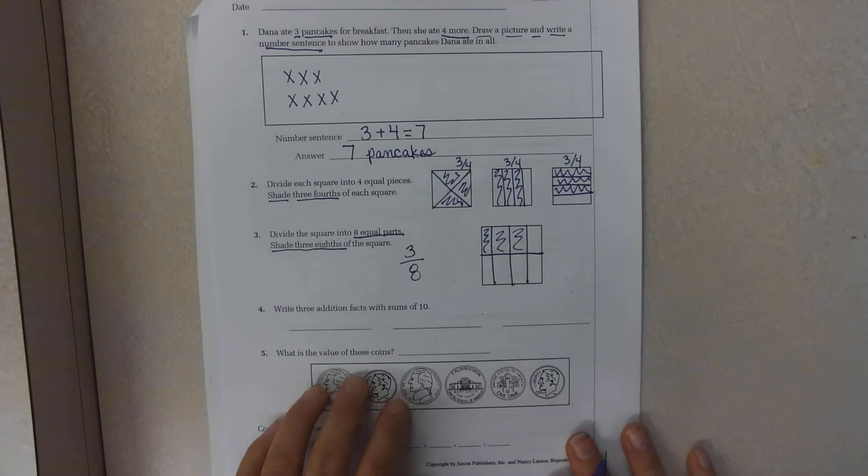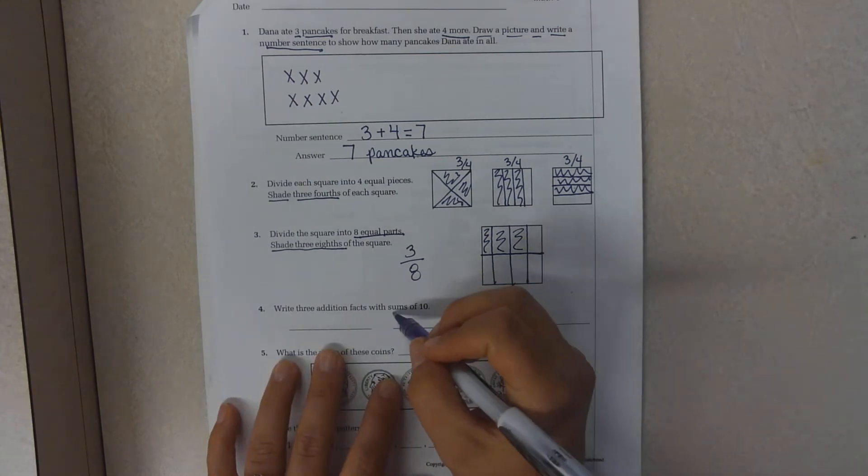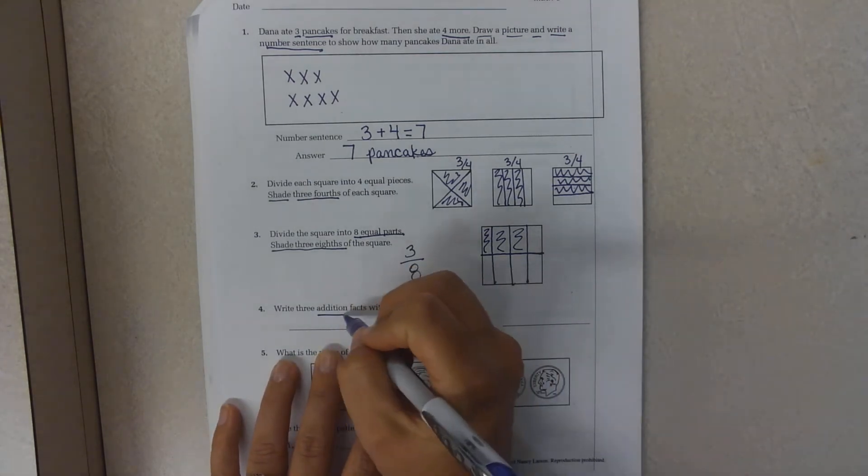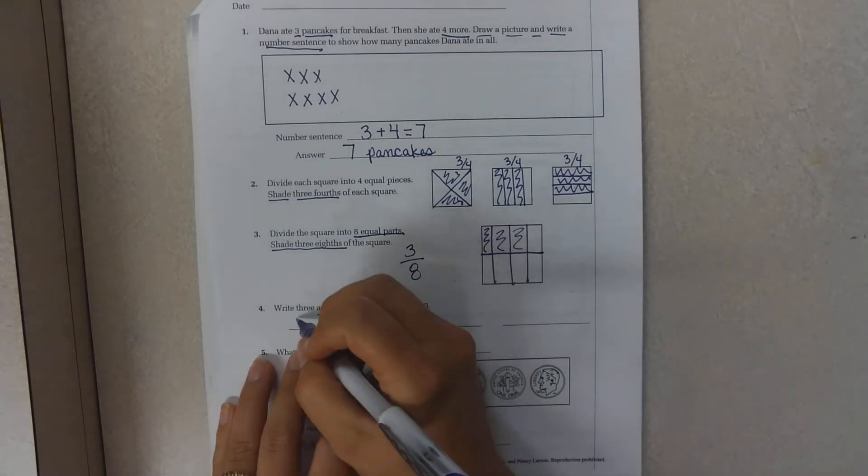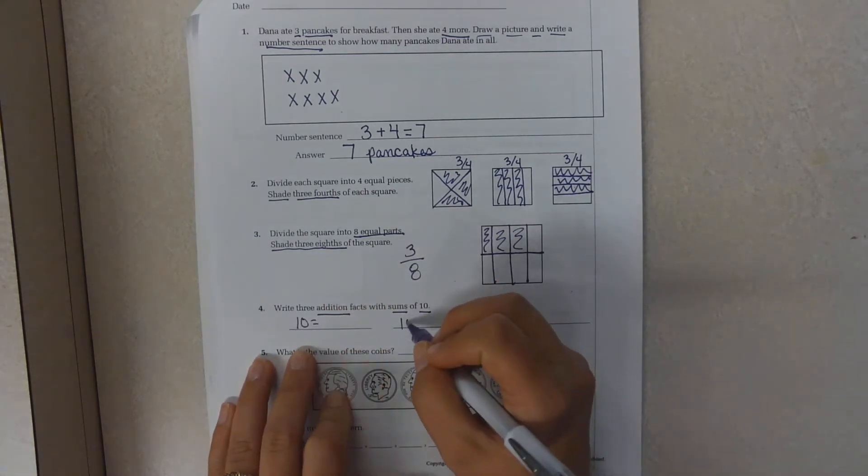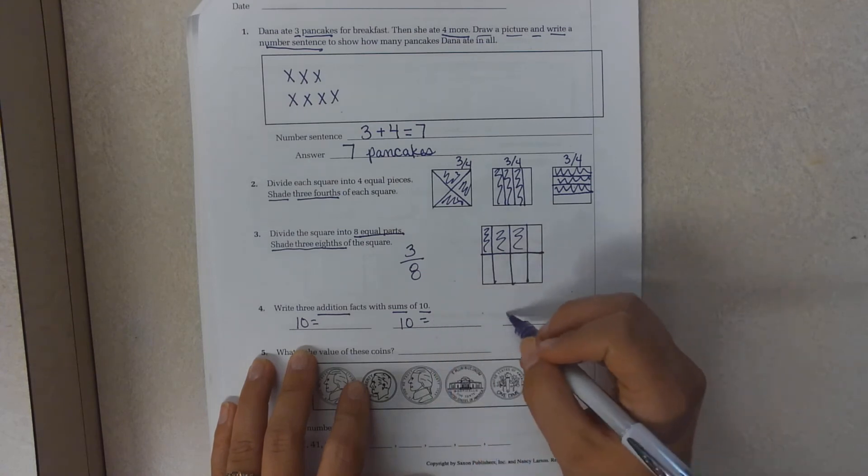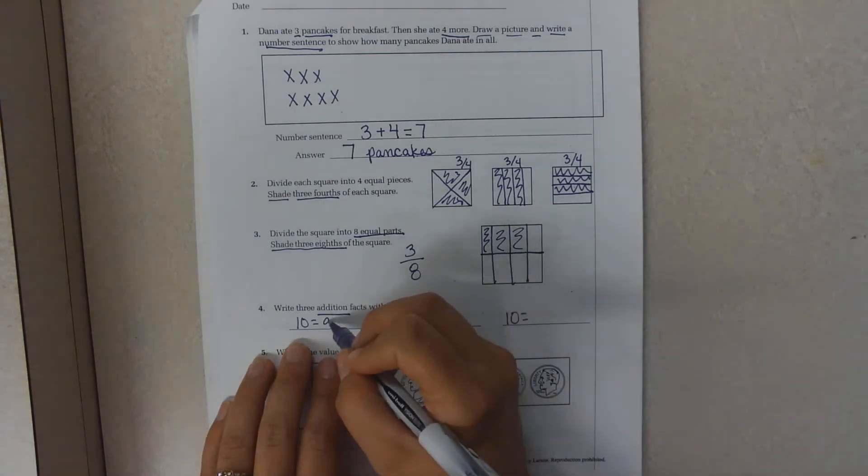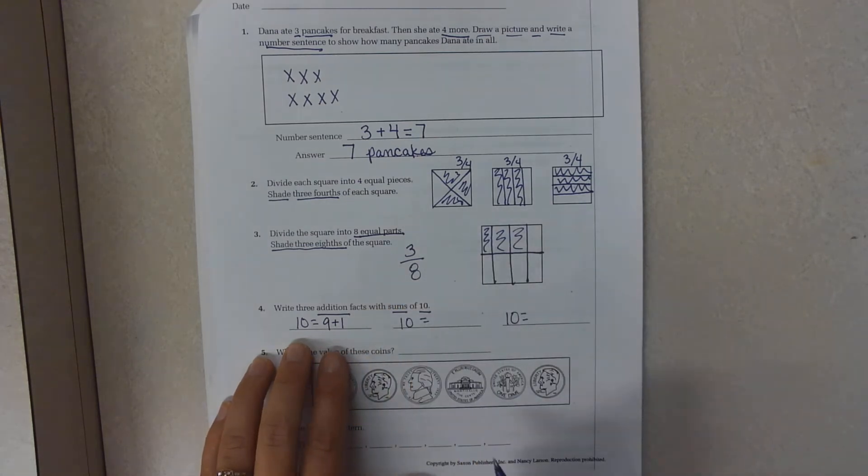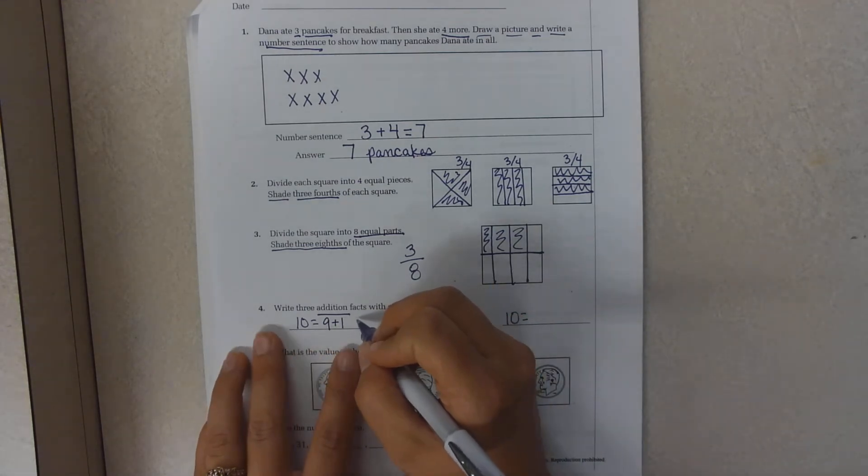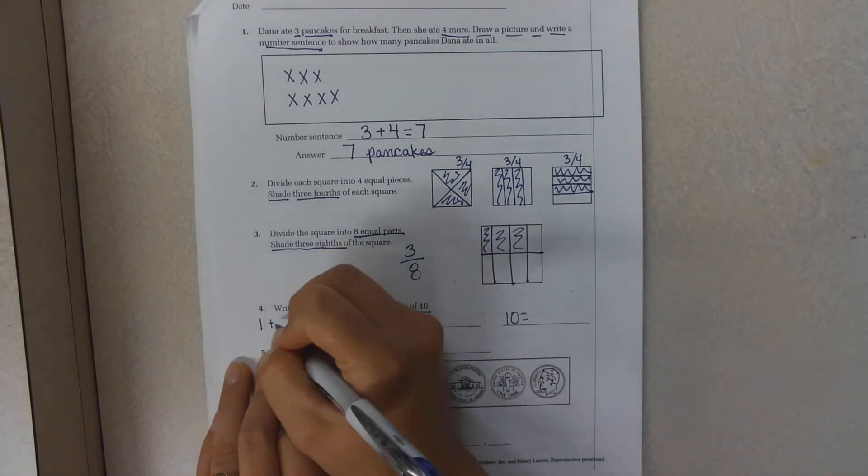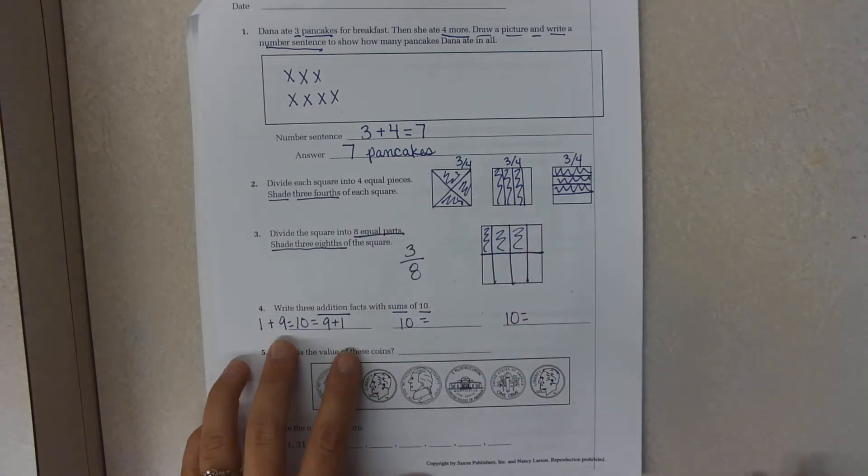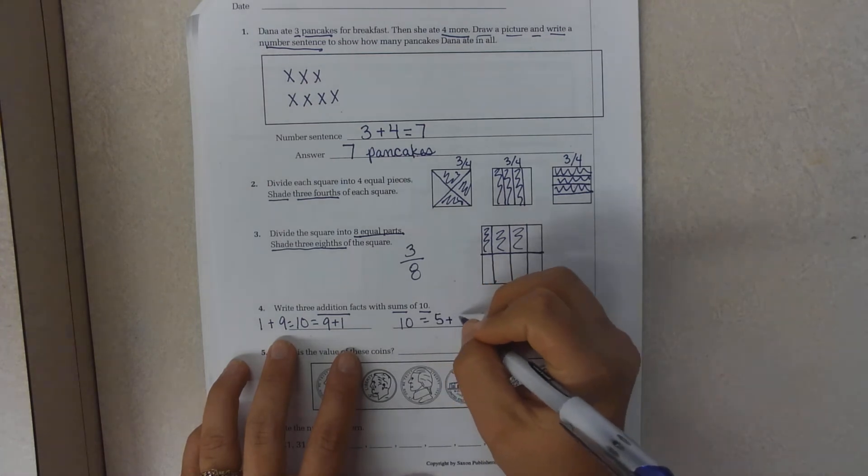Write three addition facts with the sum of 10. So we're doing addition facts. And so my answer will be 10. Well, I know nine plus one is 10. The commutative property is one plus nine. That's two facts. But I want to be a little bit more original. I could do five plus five.